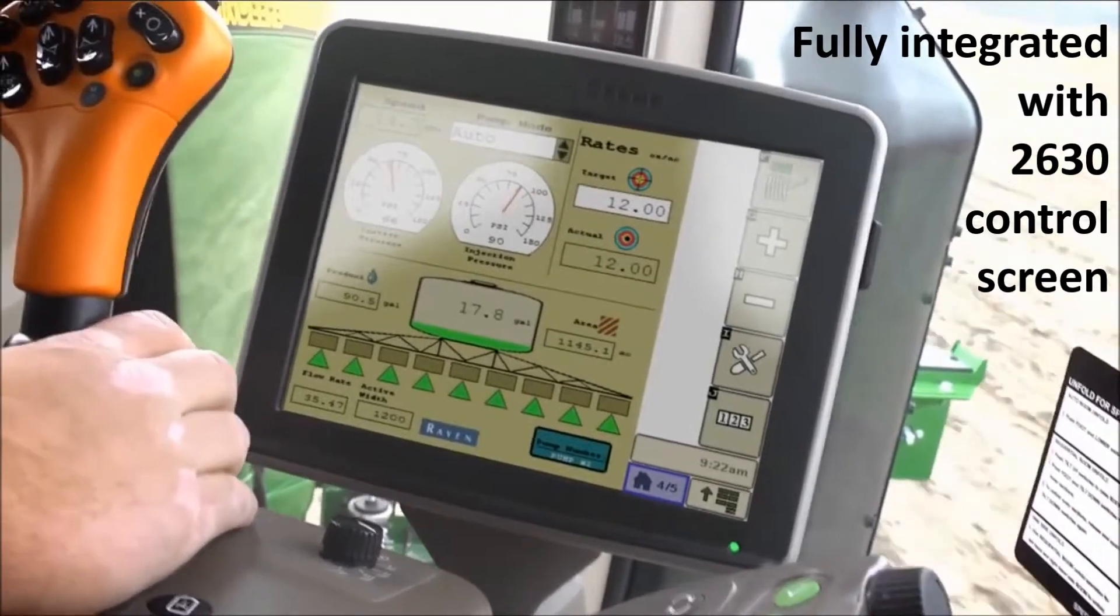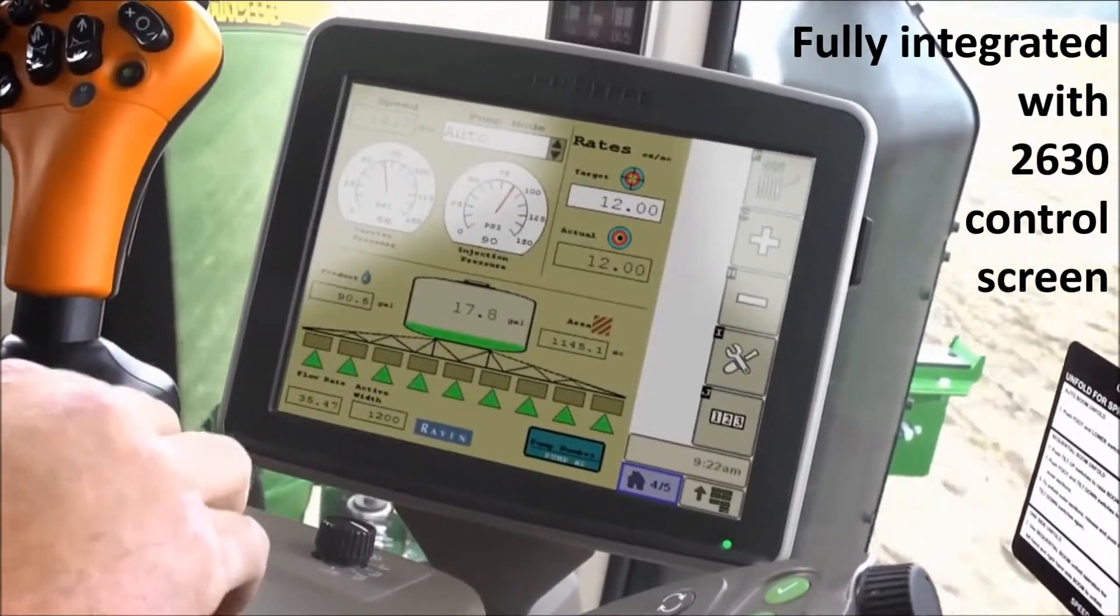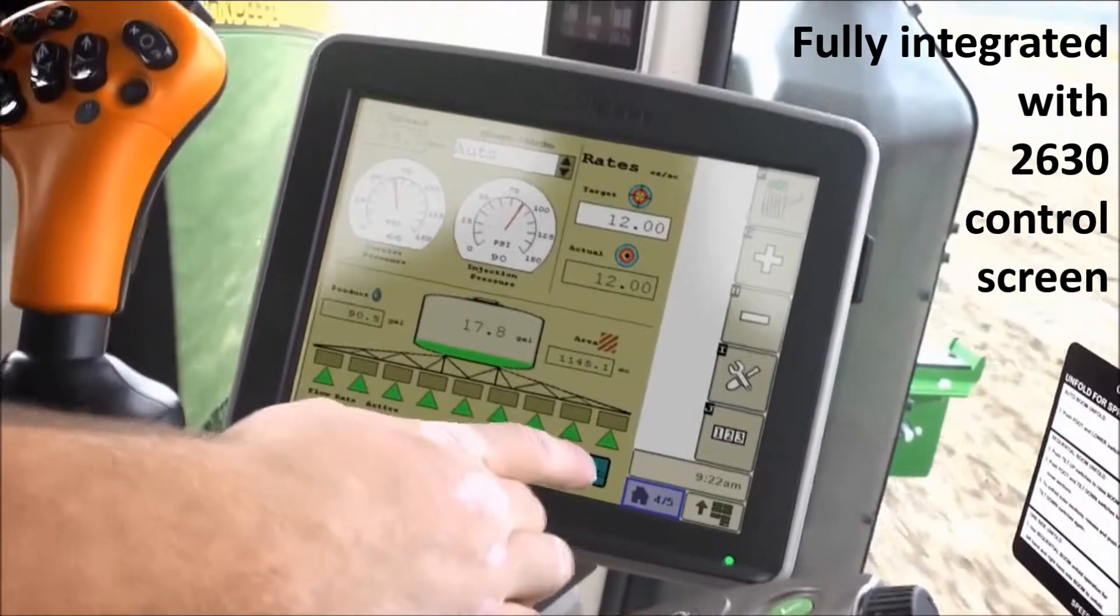From the cab, enter the target product application rate from the integrated direct injection screen on the GreenStar display.